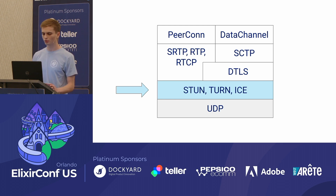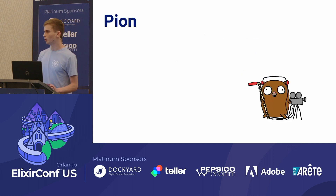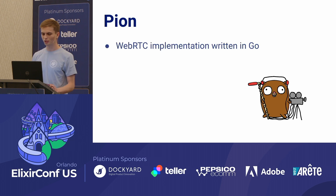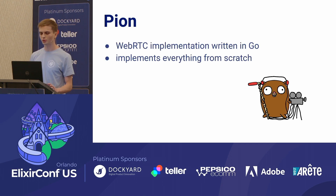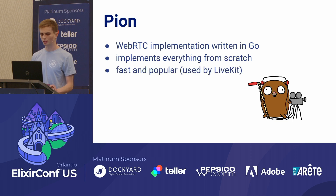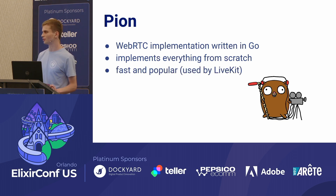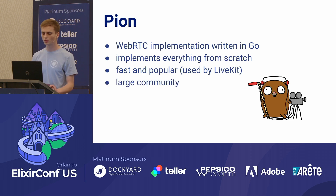STUN, TURN, and ICE are three protocols used to establish a peer-to-peer connection. WebRTC is a standard, and Pion is its implementation written in Go. It implements every single protocol from scratch, it's very fast and popular — used by LiveKit, which is used by Spotify — and it has a very large and supportive community.